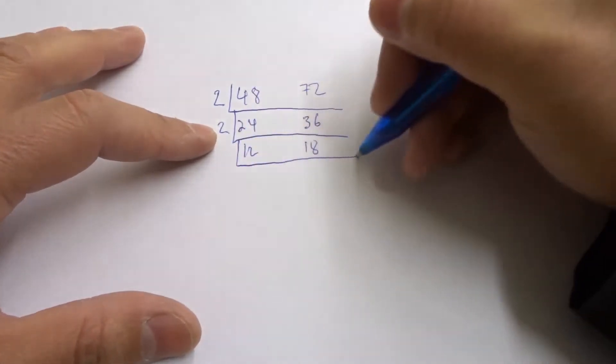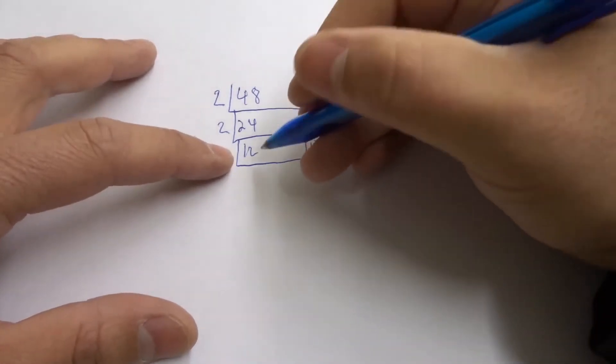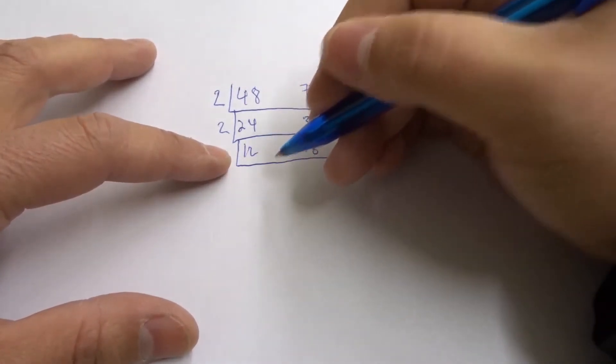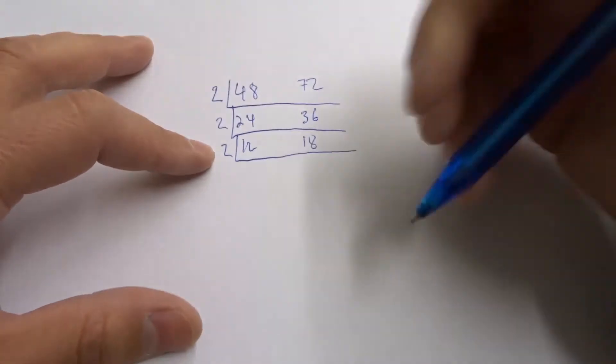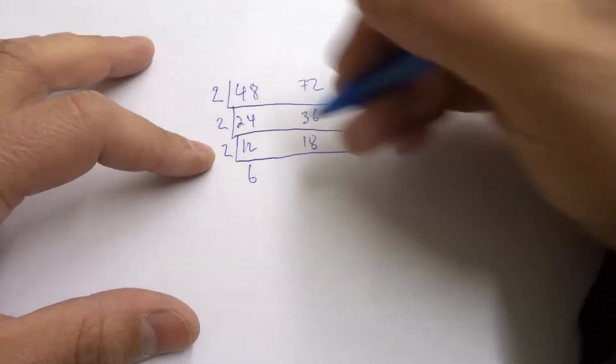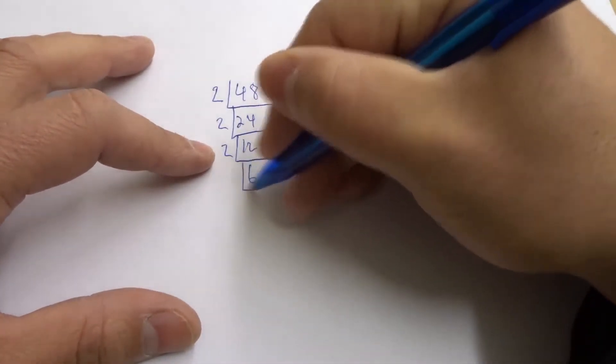Draw another ladder just like that. Once again, we are doing the smallest prime number that goes into both, which is going to be 2 again. 12 divided by 2 is 6, 18 divided by 2 is 9. Draw a ladder just like that.